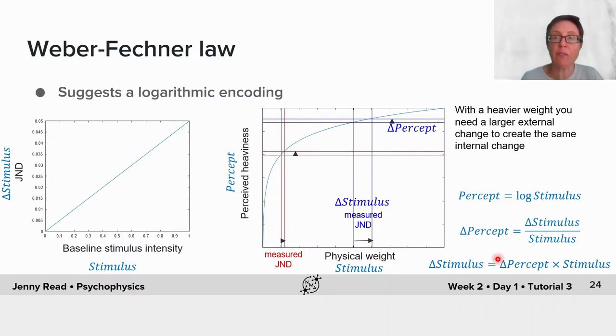You can go through the maths and work out that if the percept is a log function of the stimulus intensity, then the change in stimulus intensity required to bring about a given change in percept is proportional to the stimulus intensity itself, exactly as Weber's law describes.